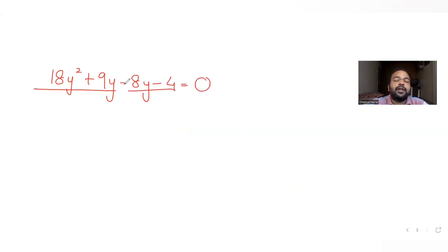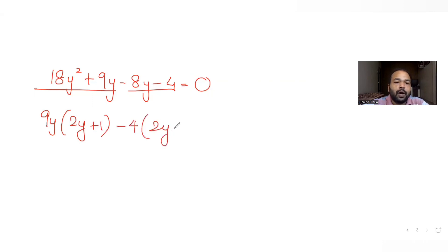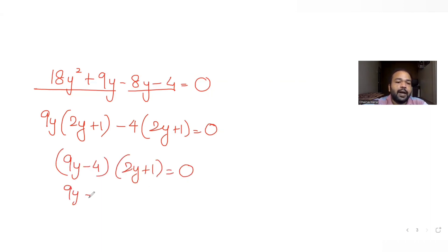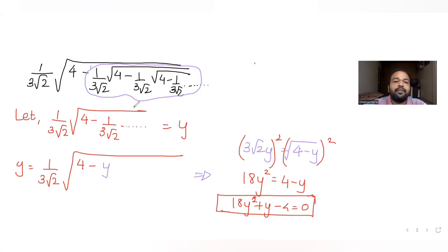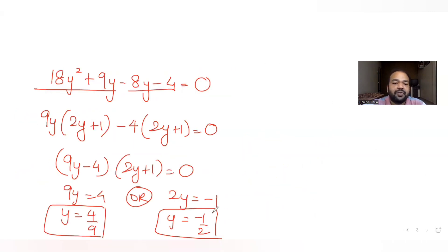So we have the quadratic 18y² + y − 2 = 0. To factor it, I need the product to be 72 and the terms to differ by 1, so I write it as 18y² + 9y − 8y − 4. Taking common factors: 9y(2y + 1) − 4(2y + 1) = 0, giving (9y − 4)(2y + 1) = 0. So y = 4/9 or y = −1/2.